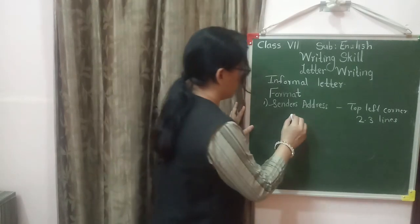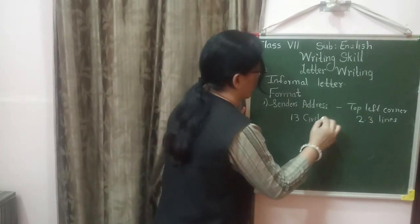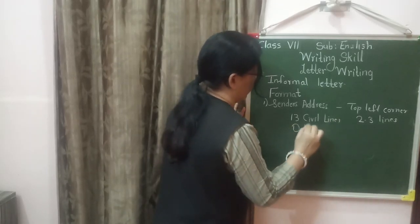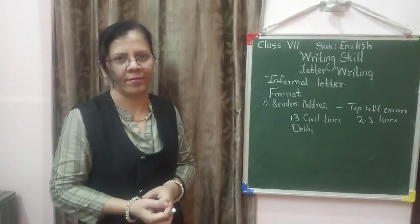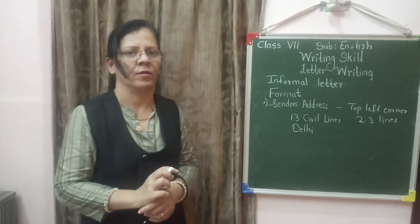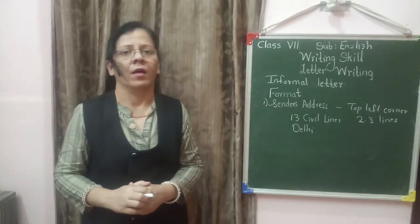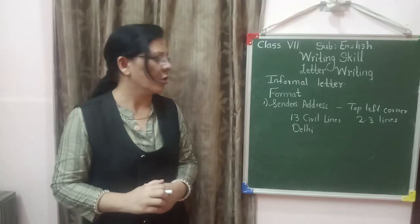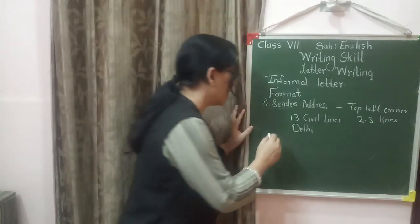For example, you can write '13 Civil Lines' as your address — keep it to only 2 to 3 lines. After the address, you need to leave one line and write the date.